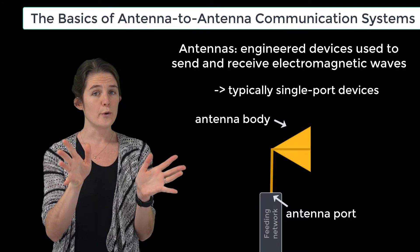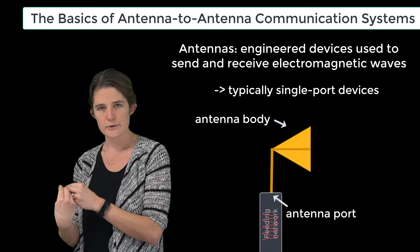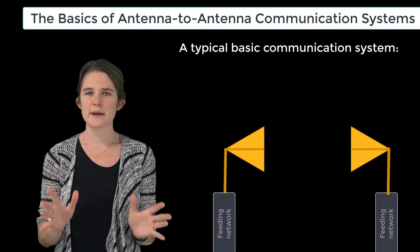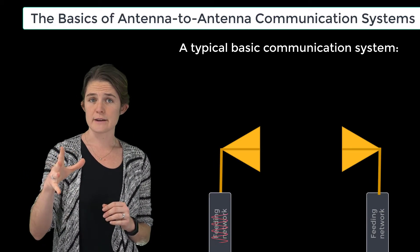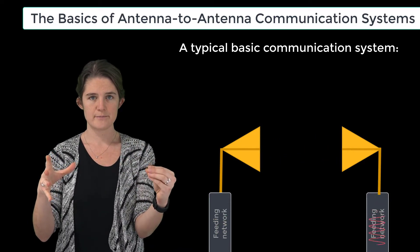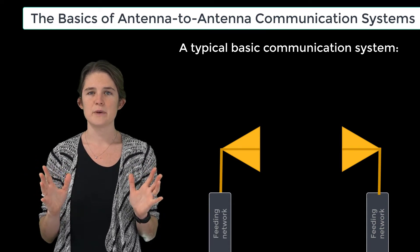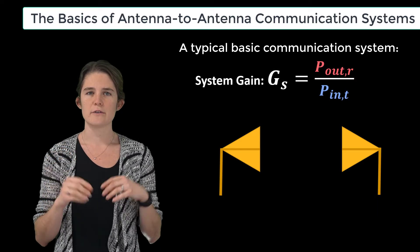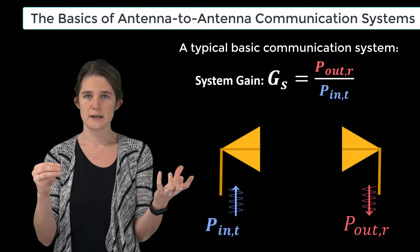Electromagnetic energy impinging upon the body of the antenna may be funneled out through the port in the receive mode. A typical basic communication system involves two antennas — one of which is used to transmit a signal and the other to receive it. Like any system with an input and an output, the basic two-antenna system may be analyzed in terms of a system gain: the ratio of the power coming out the port of the receive antenna to the power entering the port of the transmit antenna.